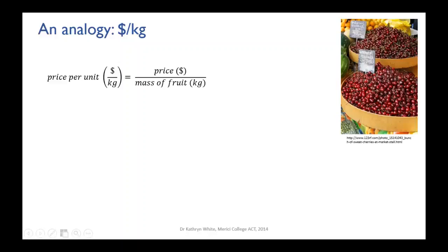There's a relationship between the price per unit, the price paid by the customer, and the mass of the fruit that they want. We can write that relationship as: the price per unit, which is in dollars per kilo, equals the price in dollars over the mass of fruit that they buy in kilos.